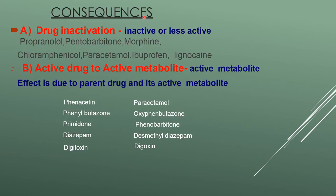The consequences of drug biotransformation: first, a drug could be inactivated — for example, morphine, paracetamol, and chloramphenicol can all be inactivated. Second, an active drug can be converted to an active metabolite — for example, digitoxin is converted into digoxin, which is an active metabolite.